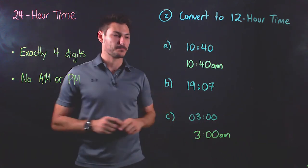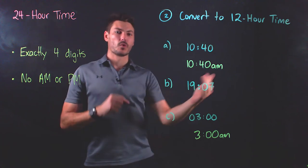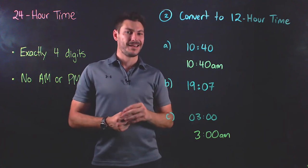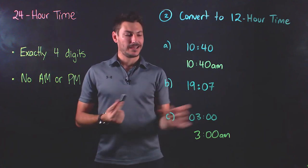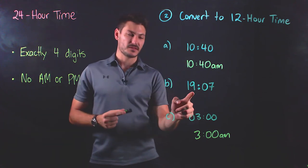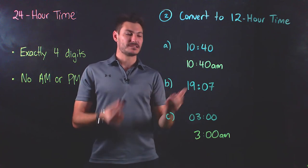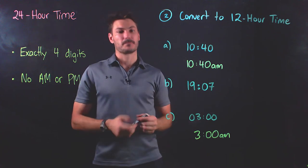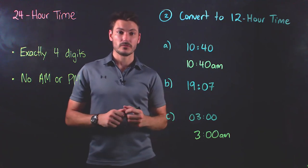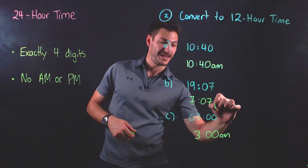And finally, we've got part B, which is 1907. Now this one here is more than 12. This hours is more than 12. So we know it's going to be a p.m. time. And the way you figure out the hours is that this number, minus 12, or the difference between this number and 12, how many hours has it been since midday, is the hours in p.m. So 19 is 7 more than 12. And so it's going to be 707 p.m.